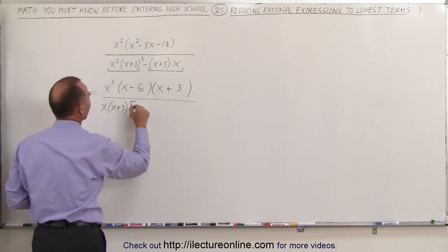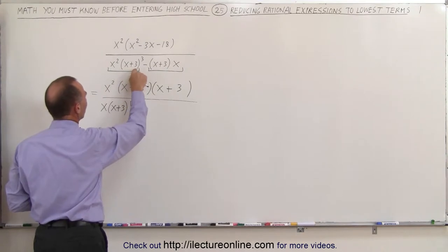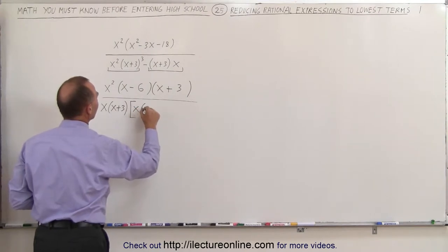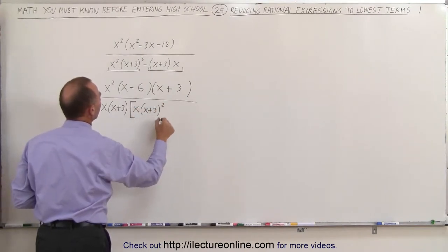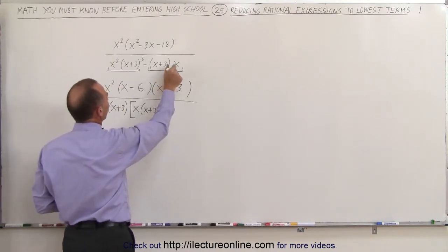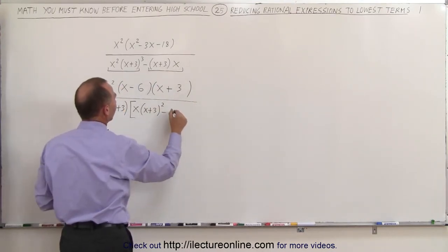On the left side, I have an x left, and I have a quantity x plus 3 squared left, because I only factor out an x plus 3 to the first power. So this gives me x times x plus 3 squared minus... And here, notice that when I factor out an x and x plus 3, all I have left is a 1.